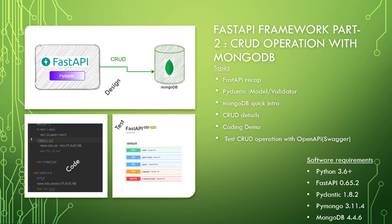CRUD stands for Create, Read, Update, and Delete. We map these operations to typical HTTP REST methods: GET, POST, PUT, and DELETE. So: Create maps to POST, Read to GET, Update to PUT, and Delete to DELETE.